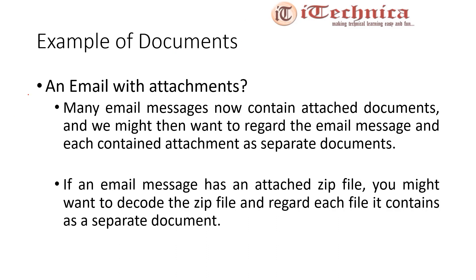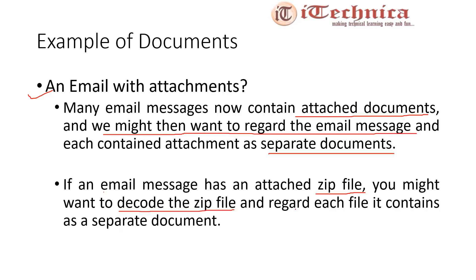A further category may be a simple email with a number of attachments, which we send in daily life. Many email messages contain attached documents of different types. For indexing purposes, we might want to regard the email message and each contained attachment as a separate document. If an email has an attached zip file in compressed form, we first need to decode the zip file and regard each file it contains as a separate document.